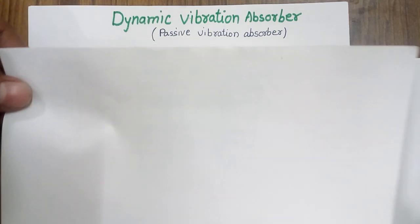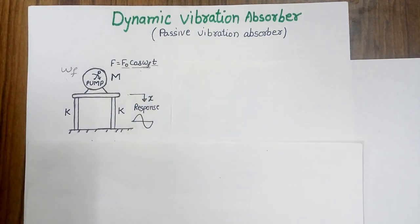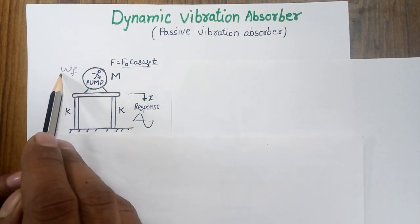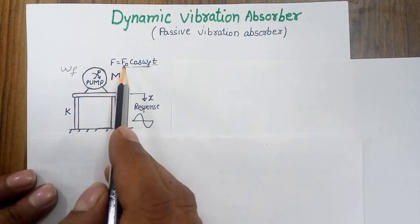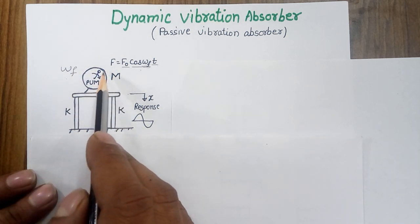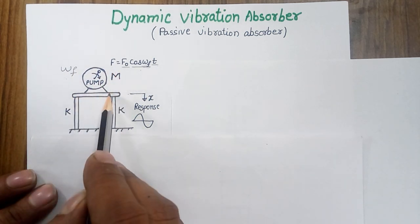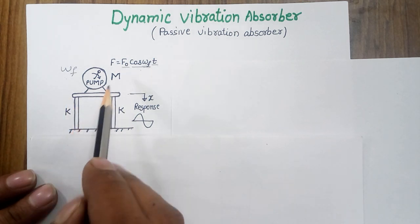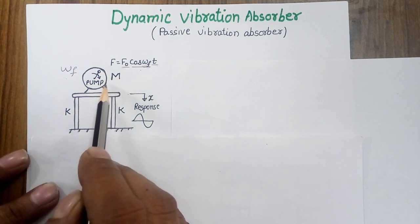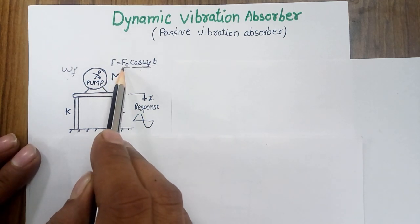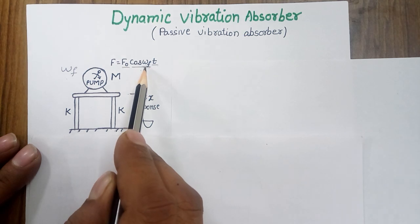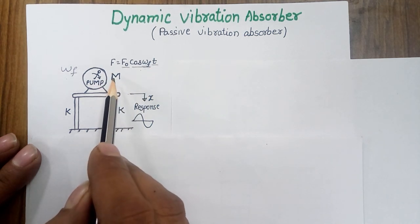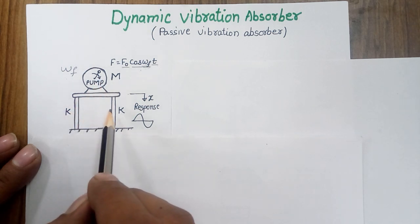To understand the function of a vibration absorber, let's consider a problem of a pump mounted on a platform. The pump is rotating with a certain rotational speed, and because of the unbalance in the forces, a force is acting on the platform. The platform has stiffness k in the vertical direction, and the force acting on the system is denoted by F0 cos(ωF·t), where ωF is the excitation frequency.